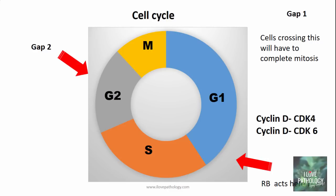A quick recap of the normal cell cycle. The normal cell cycle is composed of M phase, G1 phase, S phase, and G2 phase, where G1 is Gap 1 and G2 is Gap 2. The G1/S and G2/M are the two important checkpoints. In the previous video where I discussed about the retinoblastoma gene and retinoblastoma protein, we understood that retinoblastoma acts at the G1/S checkpoint, where the cyclin D-CDK4 complex or the cyclin D-CDK6 complex play a major role in hyperphosphorylating retinoblastoma protein.